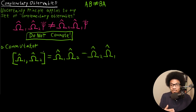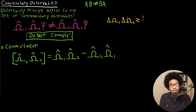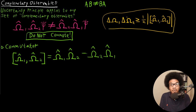This commutator relationship is so important that we can actually use it to redefine the Heisenberg uncertainty principle in a more general way. The more general form is: the uncertainty in omega-1 times the uncertainty in omega-2 is greater than or equal to one half the absolute value of the commutator of those two operators. So in order to get the uncertainty relationship between any two complementary operators, you evaluate that commutator, divide by two, and that gives you the lower bound on the product of their uncertainties.